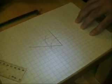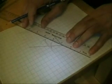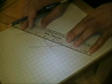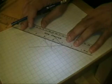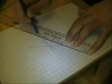And then lastly, simply joining the vertex to the point where the two arcs crossed.